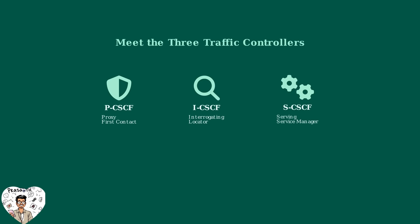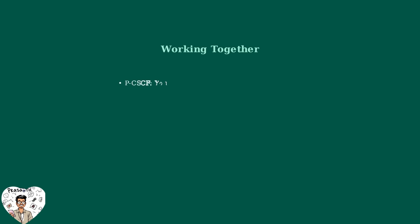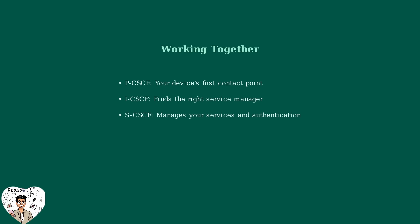Let me introduce you to the three main players. Just like traffic controllers at a busy intersection, each CSCF has a specific role in managing the flow of communication signals. Together, these three components work seamlessly during the IMS registration process. The PCSCF is your device's first contact point, the ICSCF finds the right service manager, and the SCSCF manages your services and handles authentication. In the following sections, we'll break down each role in detail and walk through the complete registration flow step-by-step.